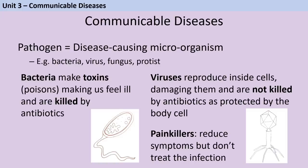Communicable diseases are those that an infected person can pass on to somebody else because the disease is caused by a pathogen — a disease-causing microorganism, which could be a bacterium, virus, fungus, or protist. Bacteria make us ill by producing poisons called toxins, and they can be killed by antibiotics. Viruses reproduce by hijacking our cells and damaging them — that's what makes you feel ill. Viruses can't be killed by antibiotics, partly because they're not alive and also because they're protected by being inside your cells. It's possible to treat the symptoms of a viral infection using a painkiller, but these treat the way you feel — they won't cure the infection or get the virus out of your system any faster.